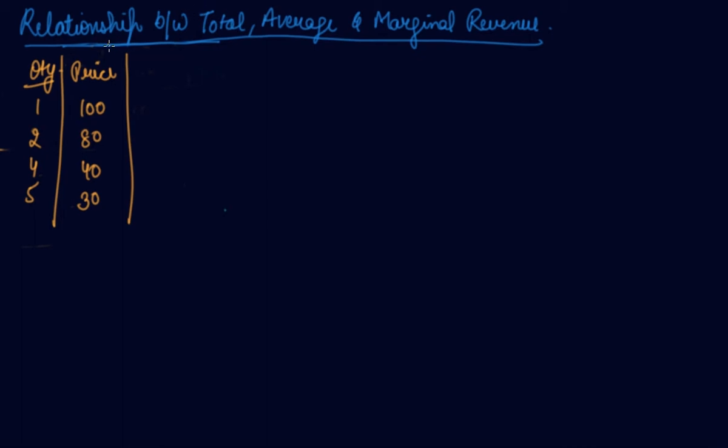In this video, we will study the relationship between total average and marginal revenue. We have taken the quantity and the price. We can calculate your total revenue by multiplying price into quantity, which gives you 100, 160, 160, and 150.